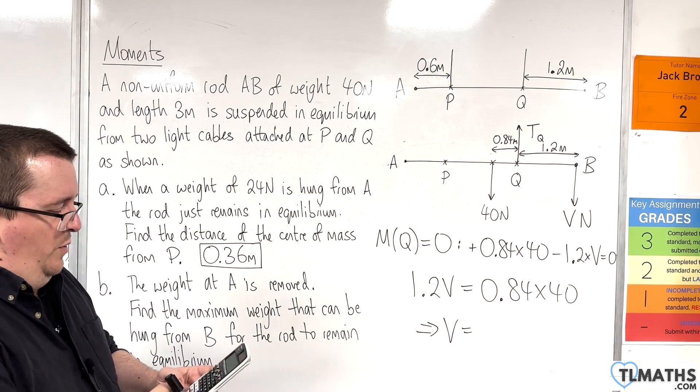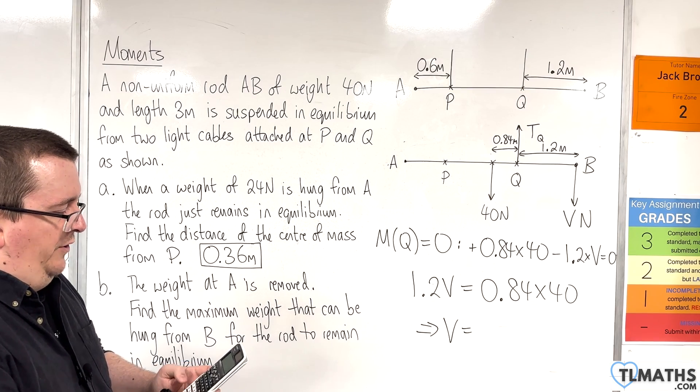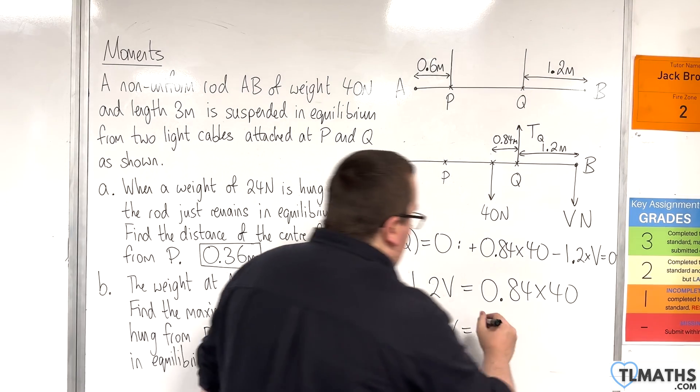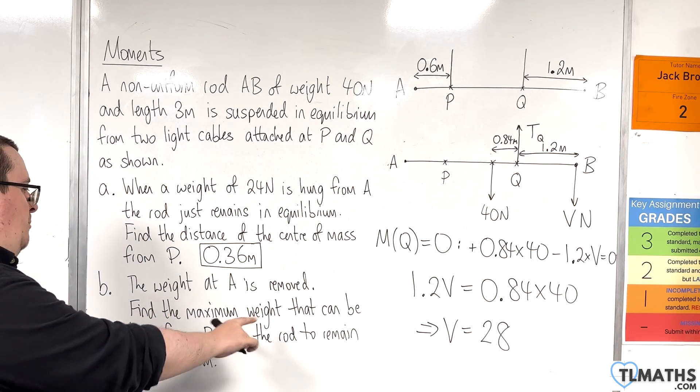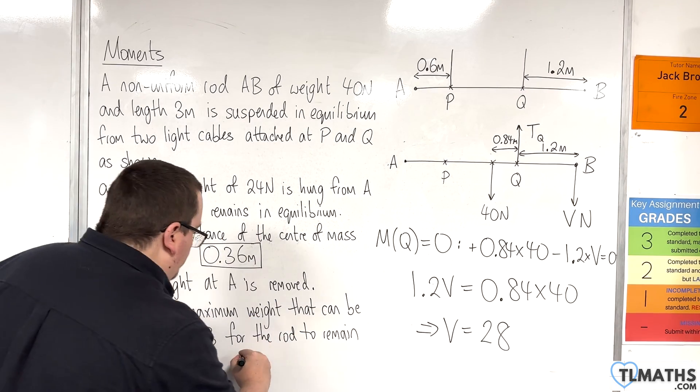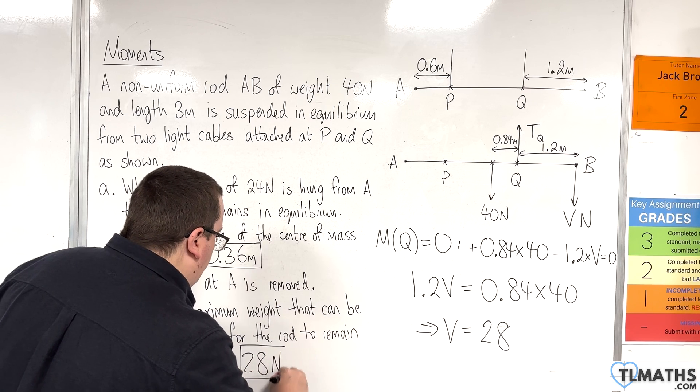So we have 1.2V is 0.84 times 40. So 0.84 times 40, divide by the 1.2, and we get 28. So the maximum weight that can be hung from B is 28 newtons.